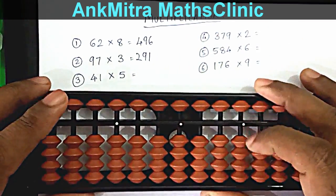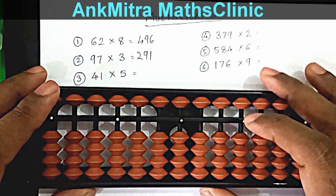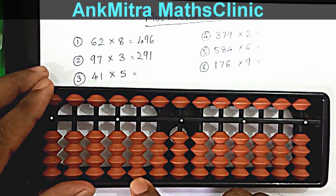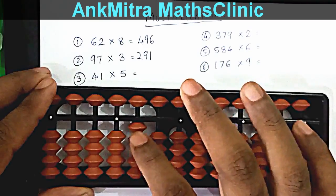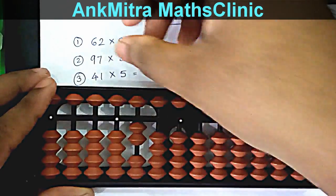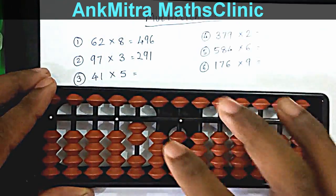The third example is 41 multiplied by 5. We start with 4 times 5: 4 fives are 20. This 20 will be taken from the third rod — 2 on the hundreds place and 0 on the tens place.